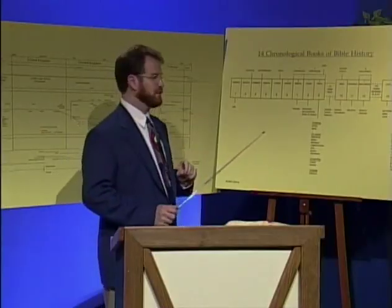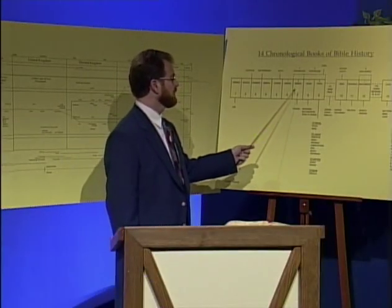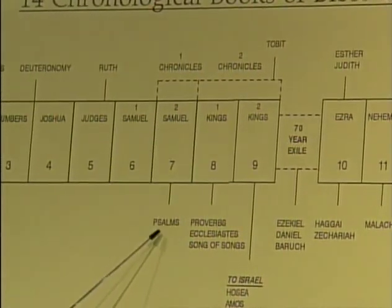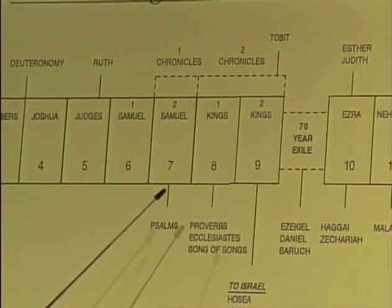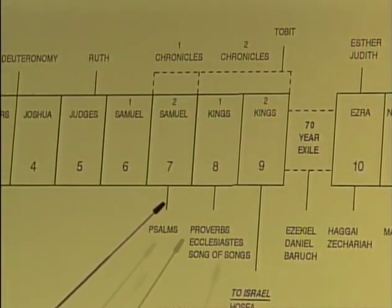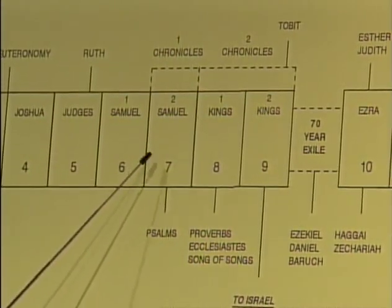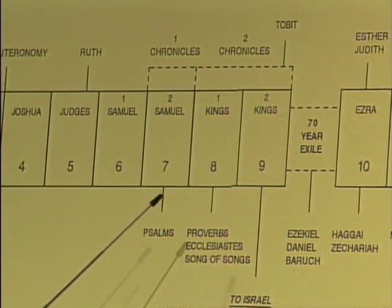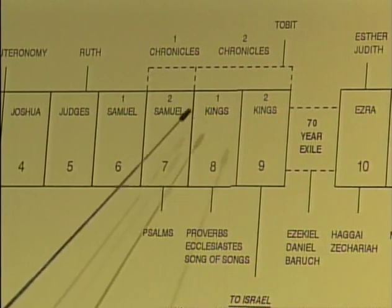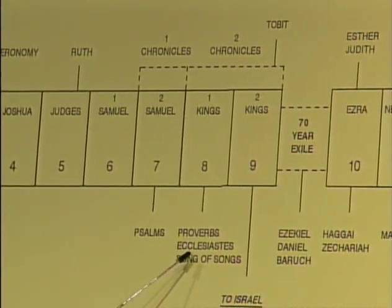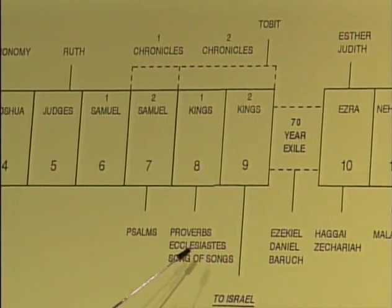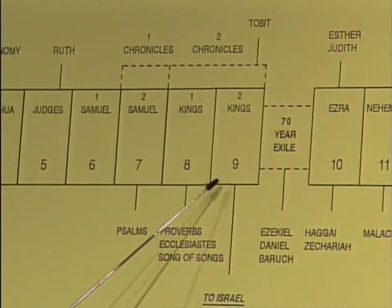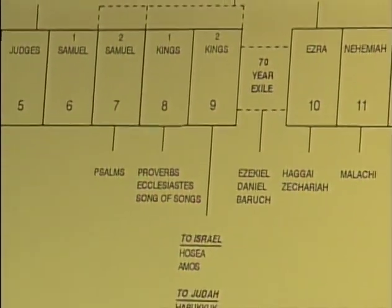During 2 Samuel, which we just covered, we had the United Kingdom. Below that on the chart we have the Psalms — it's a good idea to read the Psalms during 2 Samuel, as these are primarily David's psalms reflecting his struggles in real life. In the midst of 1 Kings we have Proverbs, Ecclesiastes, and the Song of Songs. In 2 Kings, covering the period of the exile, we have many of the prophets — and that's where a lot of people become very confused in reading the Bible.